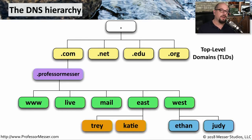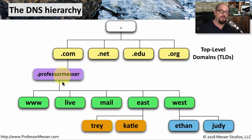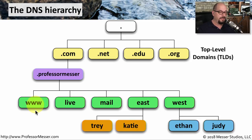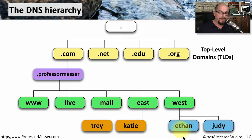Here's an example of the hierarchy used with DNS. We very often will see a .com or .net address — that's the top level domain. Underneath .com, you might have another domain name such as Professor Messer, giving you professormesser.com. At Professor Messer, there may be a web server named www, but there may also be mail.professormesser.com, east.professormesser.com, and west.professormesser.com. And you can have servers one level down from that, such as ethan.west.professormesser.com, and so on.